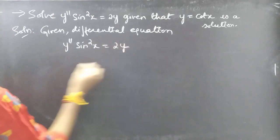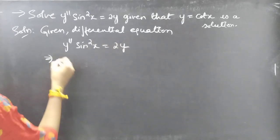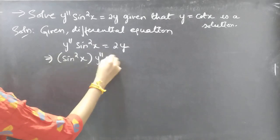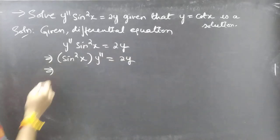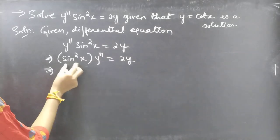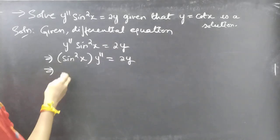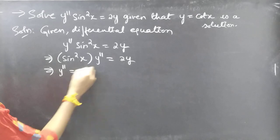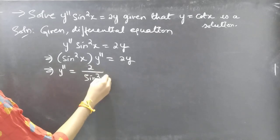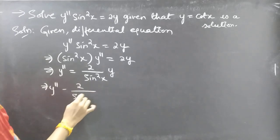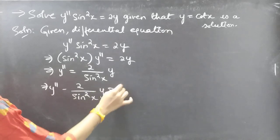Given the differential equation y'' sin²x = 2y, we write it as sin²x · y'' = 2y. Now I'm going to write this in the standard form of the second order linear differential equation. For that purpose, I'll divide both sides by sin²x so the coefficient of y'' becomes unity, giving y'' = 2y / sin²x.